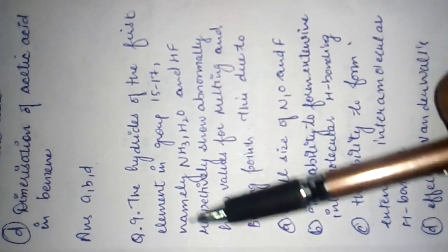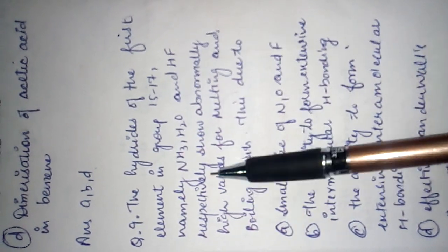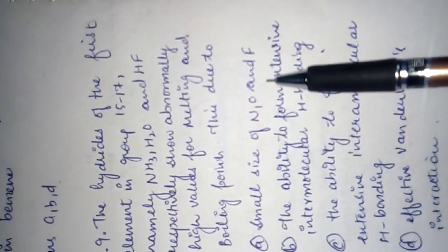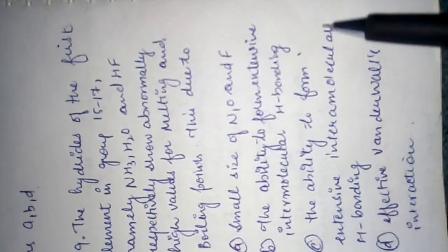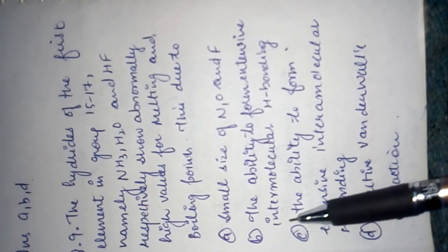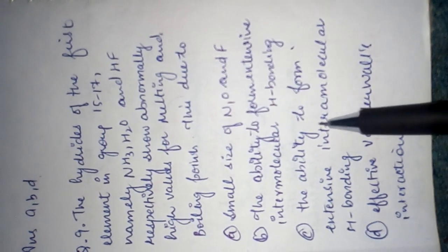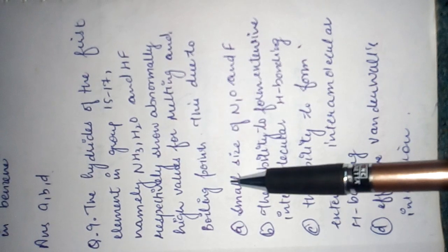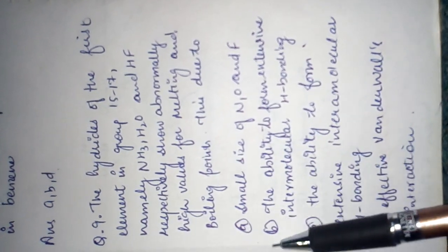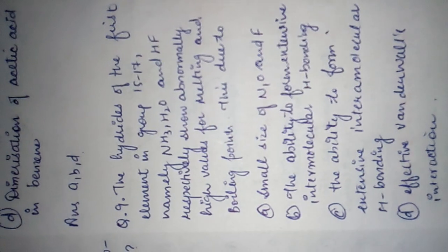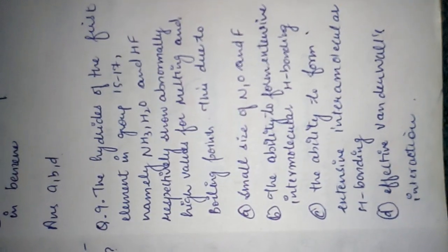The hydrides of the first elements in groups 15, 16, and 17 — namely ammonia, water, and HF — show abnormally high values of melting and boiling points. This is due to: (a) small size of nitrogen, oxygen, and fluorine; (b) the ability to form extensive intermolecular hydrogen bonding; (c) intramolecular hydrogen bonding; (d) van der Waals forces. The answer is (b), ability to form extensive intermolecular hydrogen bonding.